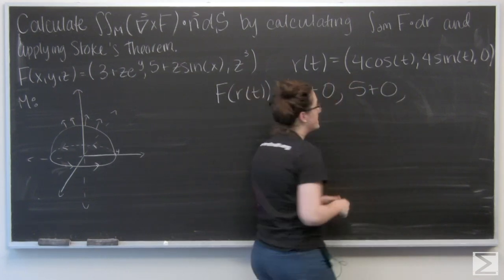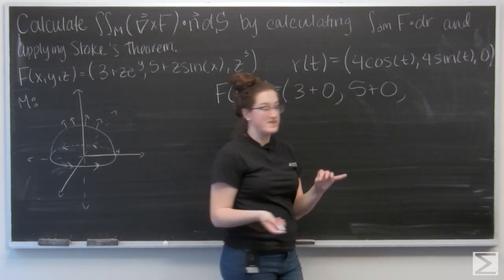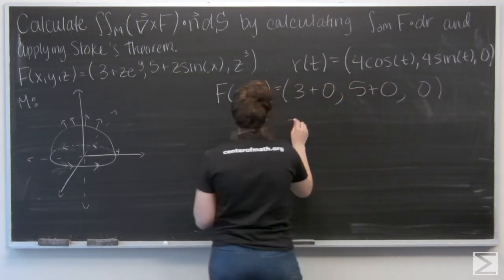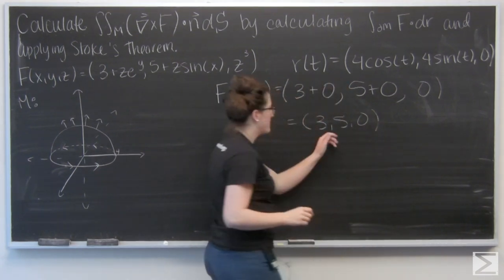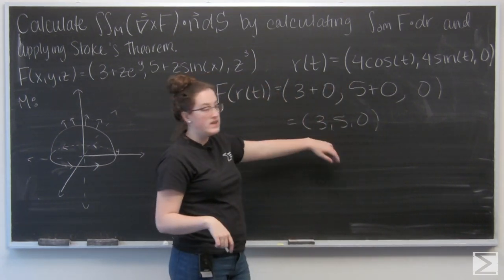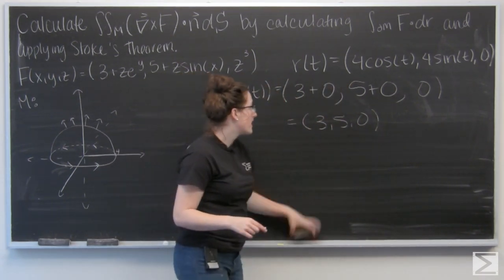And then for Z cubed, 0 cubed is just 0. So I have this constant vector 3, 5, 0. And I want to dot that with R prime of T.